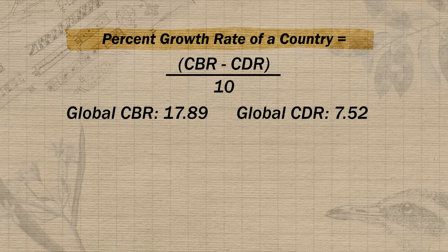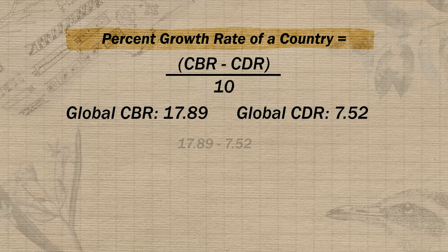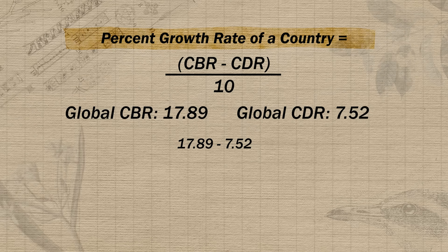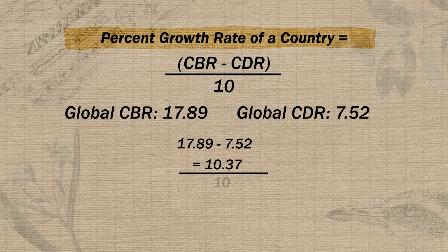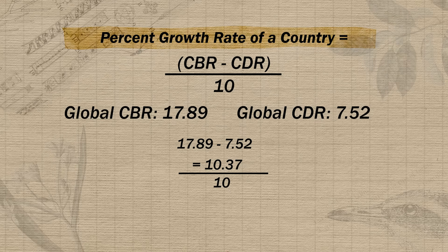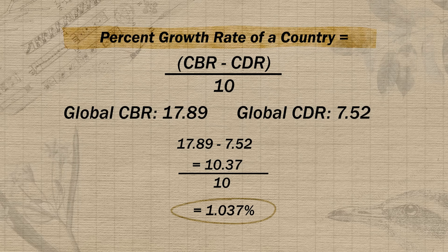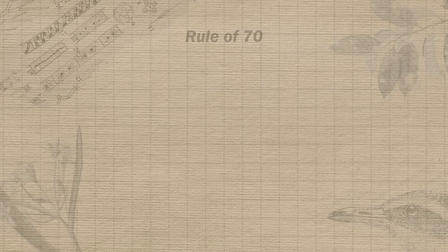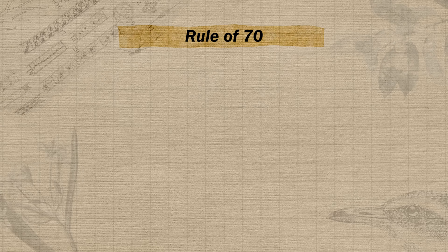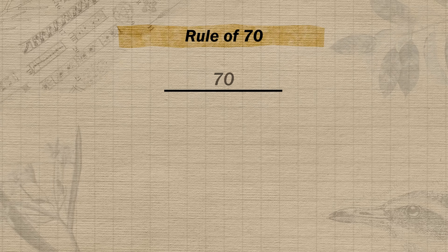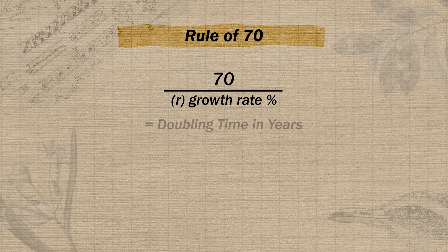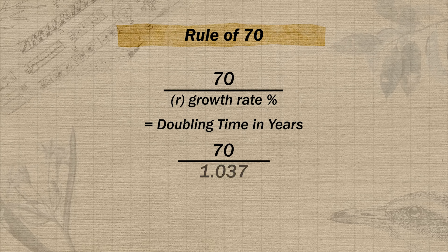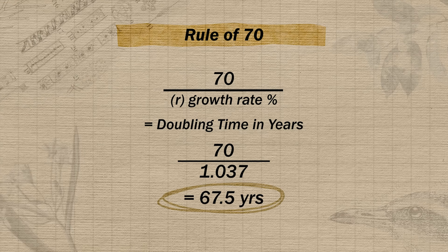Let's see how you did. We subtract the CDR of 7.52 from the CBR of 17.89, giving a difference of 10.37, then divide by 10 to get a global population growth rate of 1.037%. To find doubling time using the rule of 70, we divide 70 by the growth rate as a percent. Dividing 70 by 1.037 tells us the Earth's human population should double in about 67.5 years.